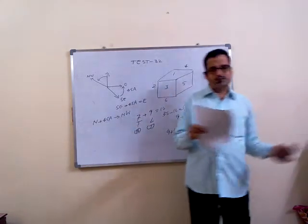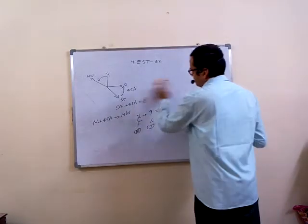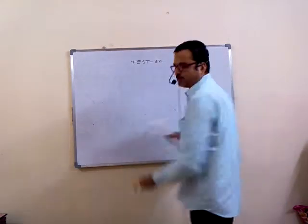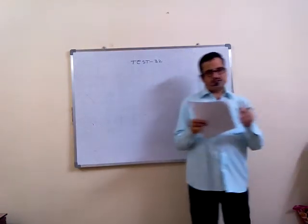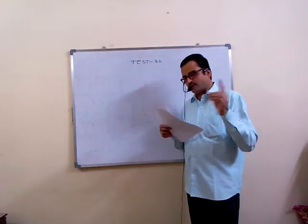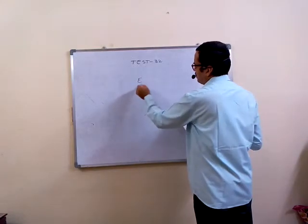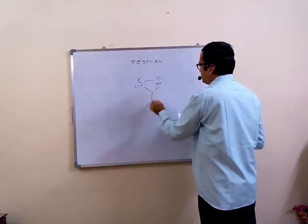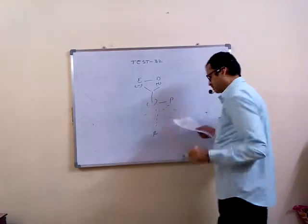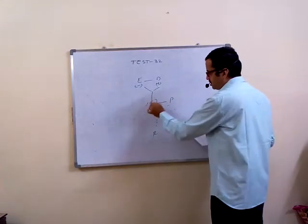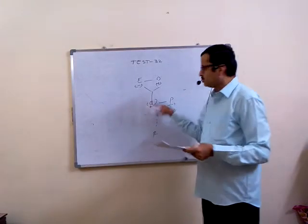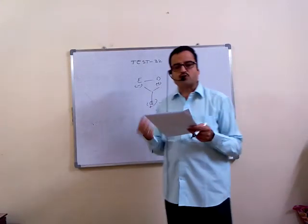Now come to the fourth one. That's based on blood relation. Whenever you discuss this kind of questions, first statement and second statement you have to connect. R is the only grandchild of E, who is wife of D. E is wife of D and mother-in-law of P. First statement: Q is the husband of P. How is Q related to D? Q is son of D. Fourth question, fourth option.